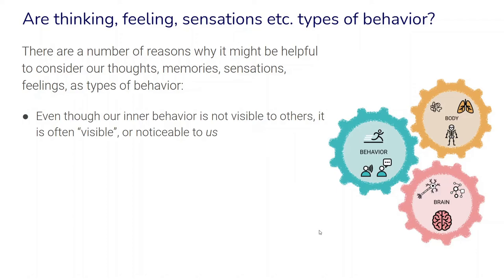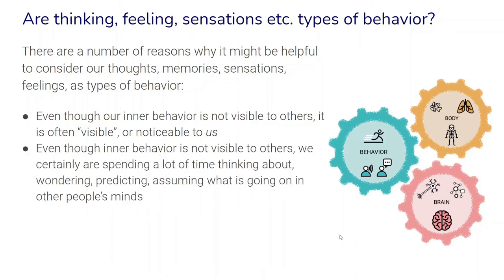Even though inner behavior is not visible to others, it is often visible or noticeable to us. We are often — though not always — aware of how we feel and think, and this constantly determines our experience and well-being. Even though inner behavior is not visible to others, we certainly spend a lot of time thinking about, predicting, and assuming what is going on in other people's minds. Psychologists call this theory of mind, and behavioral science can help us better take perspective about what others are thinking and feeling.